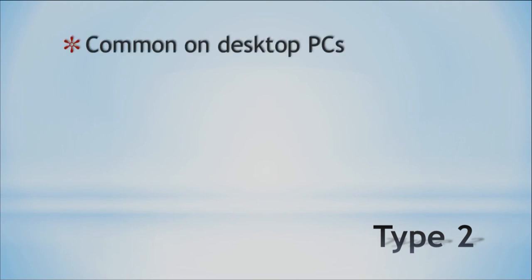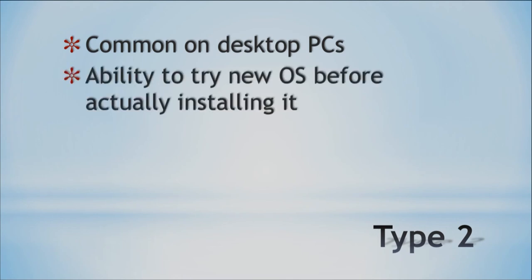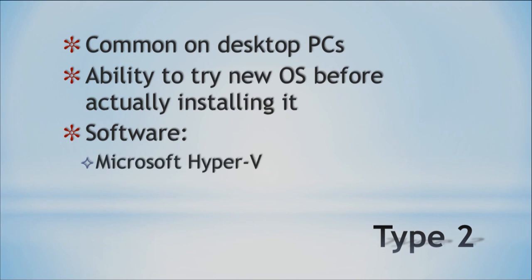Type 2 is what home users will most likely be using — it's common on desktop PCs and lets you try out a new operating system before actually installing it and replacing your current one. Examples include Microsoft Hyper-V and Sun VirtualBox. VirtualBox is free, so you can download and try it at no cost. There are also a lot of YouTube videos showing how to install other operating systems using VirtualBox, so check those out to see examples of how to do it.